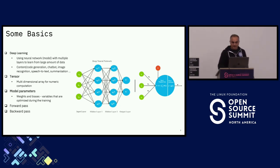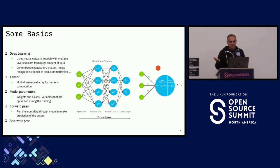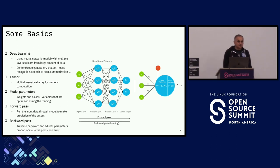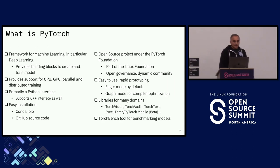In a feedforward neural network, the forward pass means you go forward through the network starting from the input until you reach an output. In PyTorch, on the first forward pass all weights and biases are assigned randomly, so your output won't be what you want. That's where the backward pass — backpropagation — comes in. That's where the learning happens: we tweak those parameters based on the loss to optimize the weights and biases to produce the output we want.